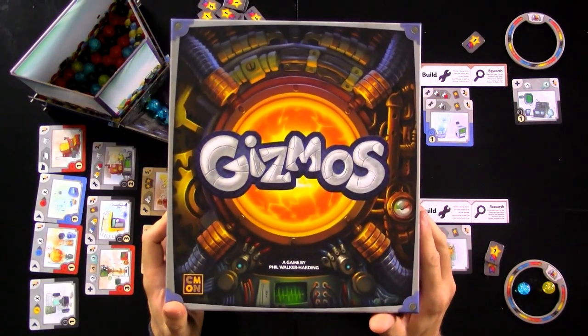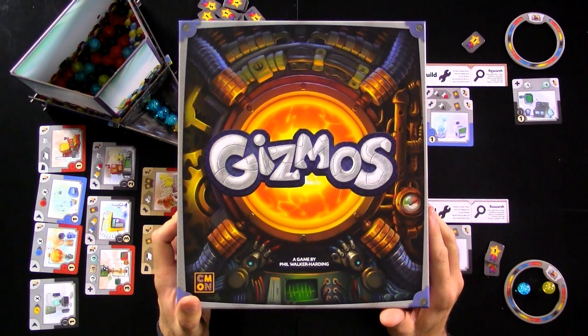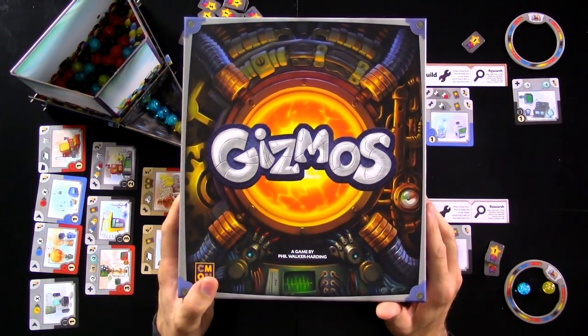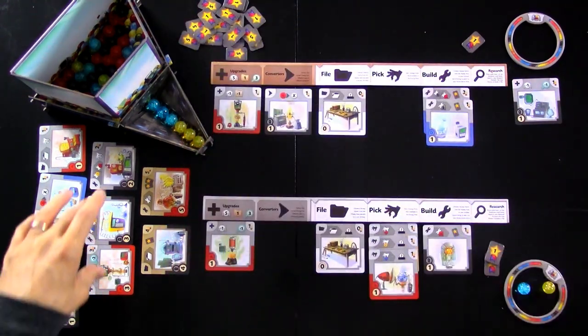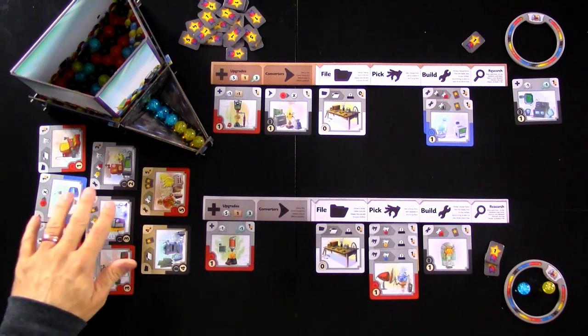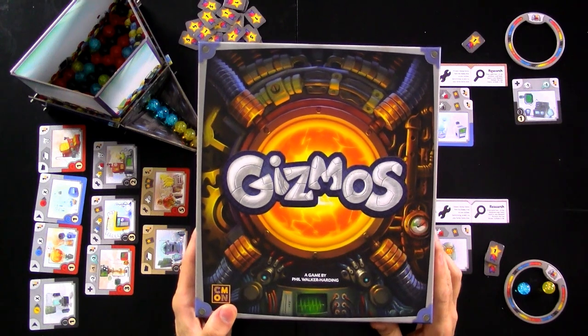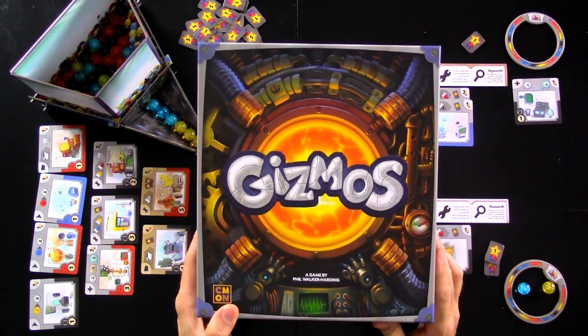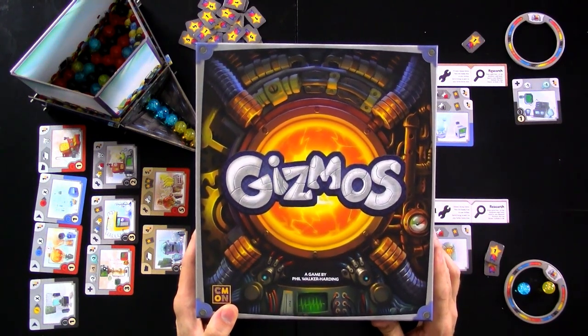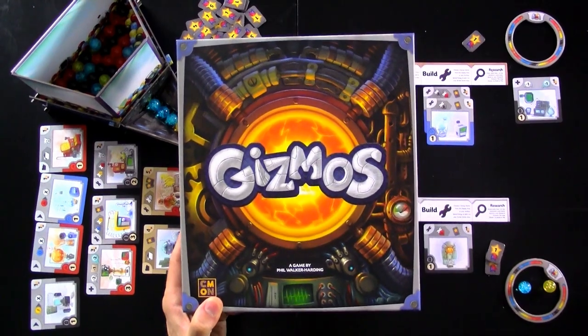That should give you a basic idea of what gizmos is all about. If you want to watch a little bit more, as we start building up, getting stronger engines, and we start building more level twos, and start building some level threes, where the powers get really fascinating, you can go on and hit that i in the top right corner screen to go to the extended playthrough, or instead, you can go to Final Thoughts. Your choice in five, four, three, two, one.